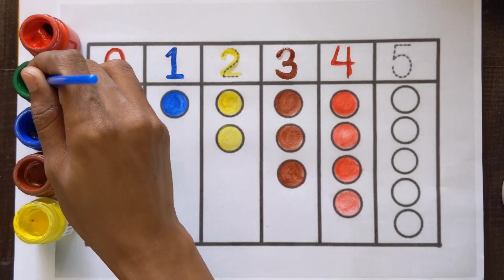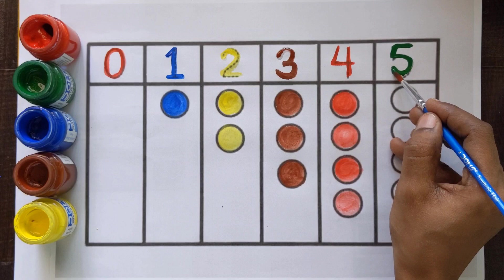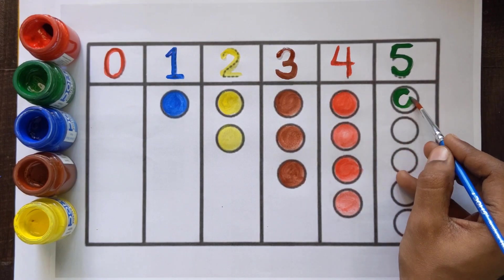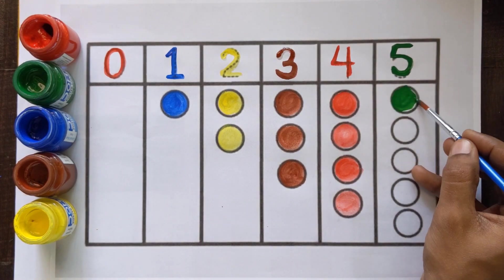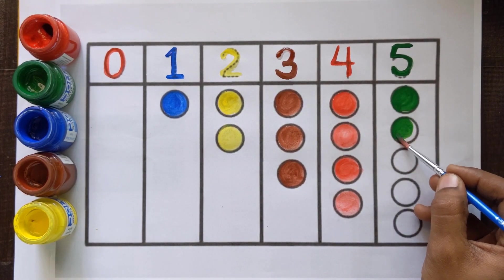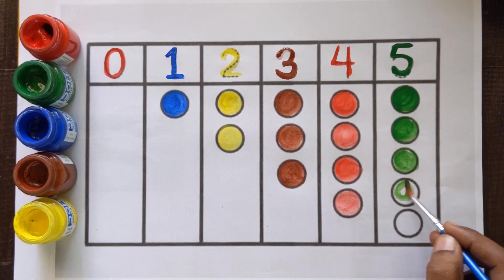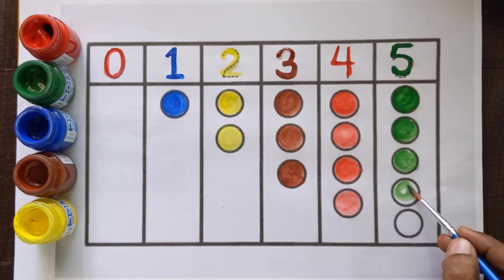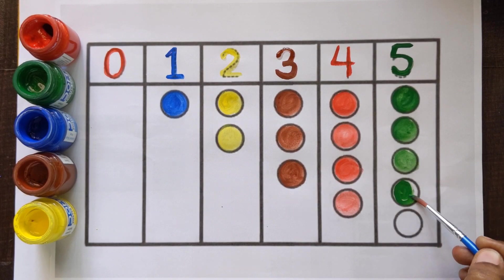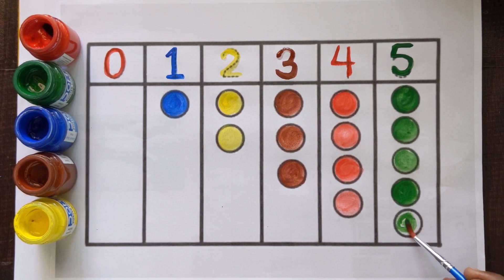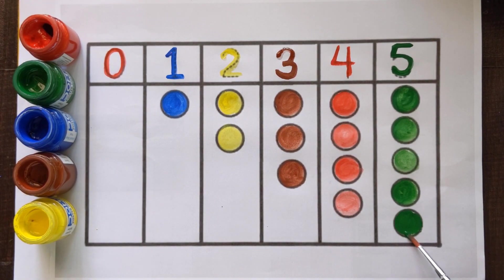Number 5, 1, 2, 3 and 4. Number 5, 1, 2, 3, 4 and 5. Number 5, 1, 2, 3, 4 and 5. Number 5, 5 color balls with a green color.